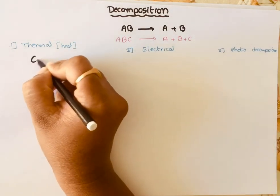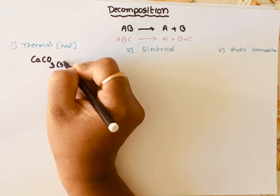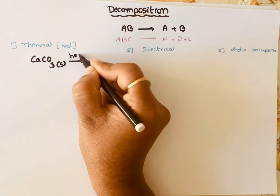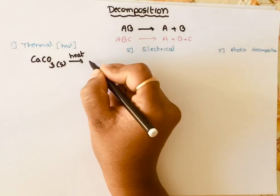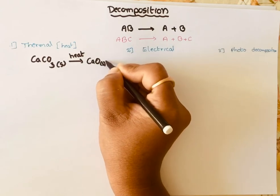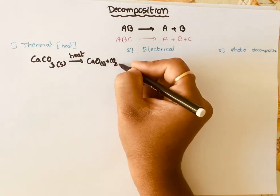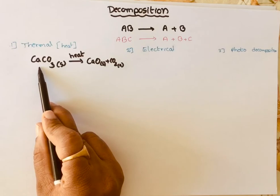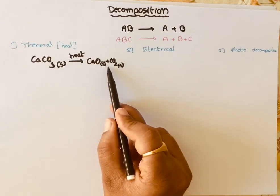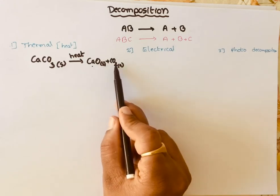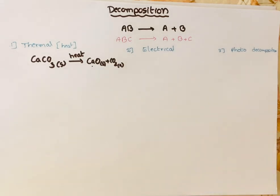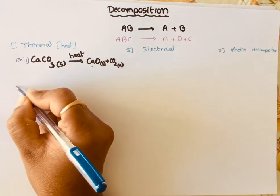For example, calcium carbonate, which is a solid — when you heat it, it undergoes dissociation into two simple compounds: calcium oxide, which is a solid, and carbon dioxide, which is a gas. A single compound heated thermally undergoes dissociation into two simple compounds, so this is an example of thermal decomposition.